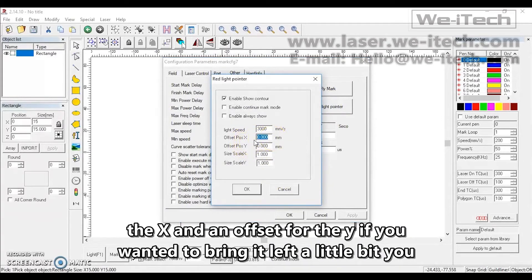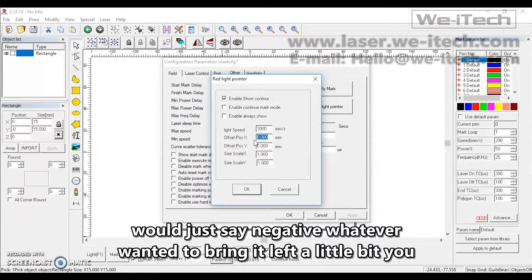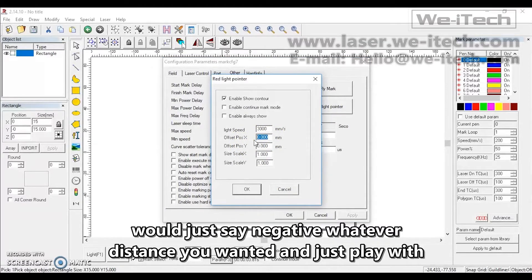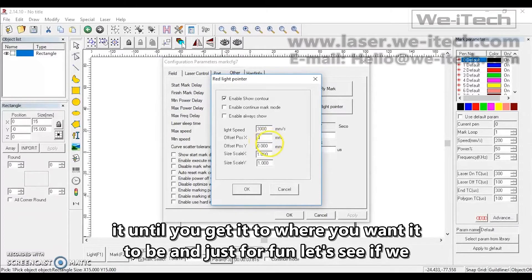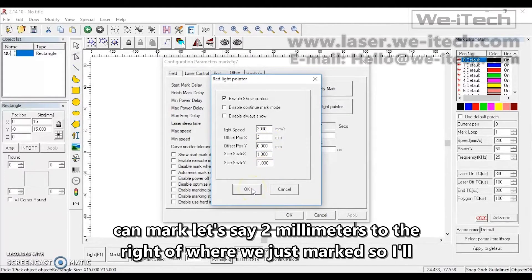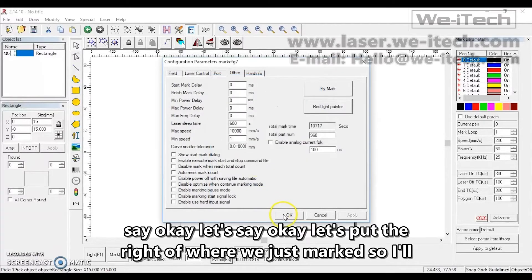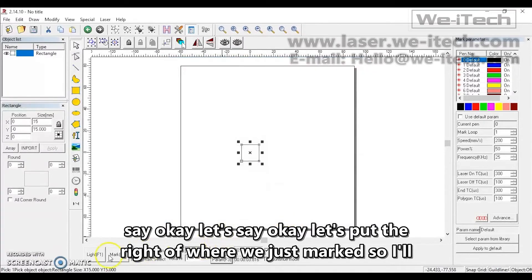If you wanted to bring it left a little bit, you would just say negative whatever distance you wanted, and just play with it until you get it to where you want it to be. And just for fun, let's see if we can mark, let's say, two millimeters to the right of where we just marked. So I'll say OK. Let's say OK.